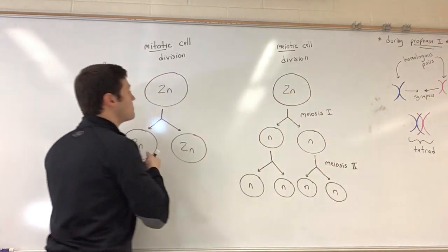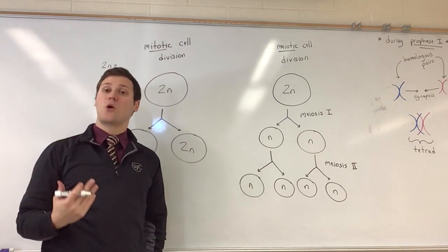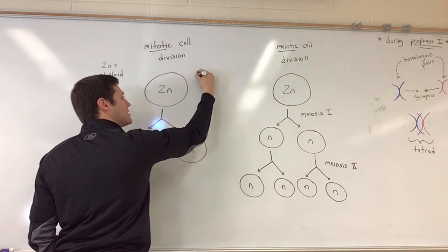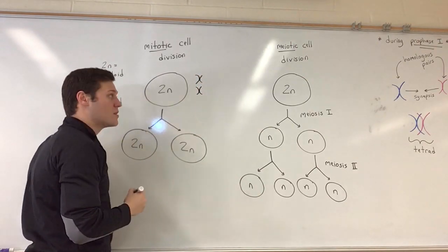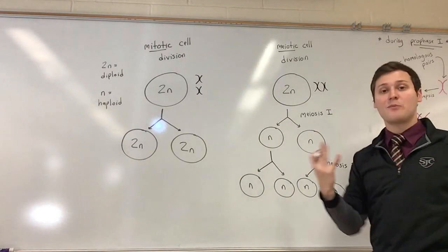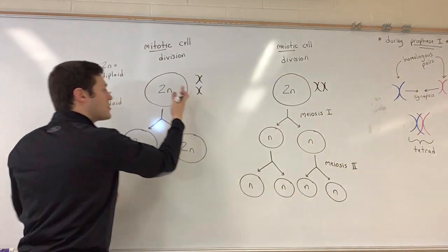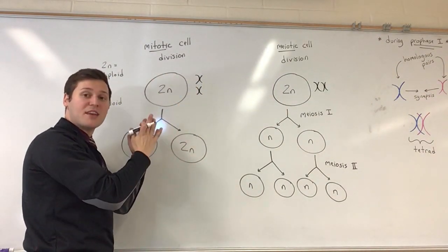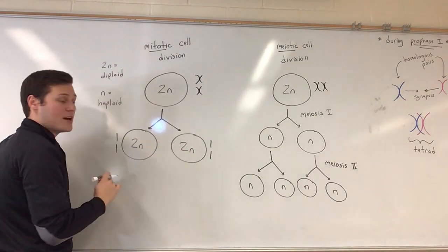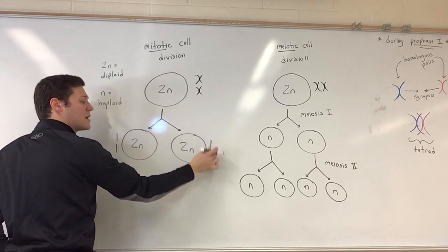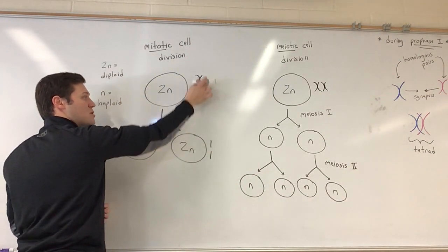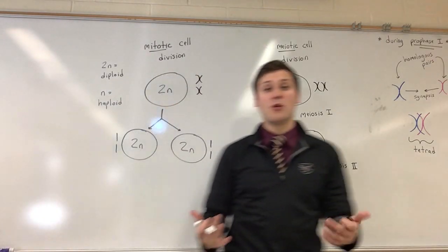Let's say we start with an organism that has only two chromosomes instead of the 46 humans have. For mitotic cell division we start with two chromosomes. After the chromosomes line up on the metaphase plate and are pulled apart, we have two unreplicated chromosomes in the daughter cells. We started with two replicated chromosomes, and the chromatids split off into unreplicated chromosomes — so we have two chromosomes in each daughter cell. Both are diploid. We start diploid, we end diploid.